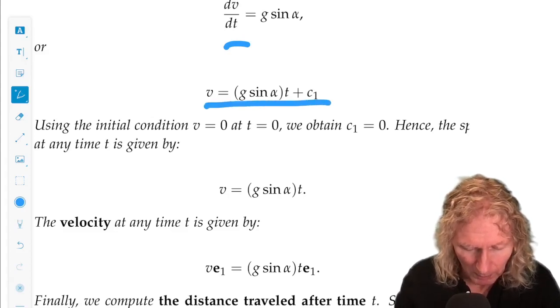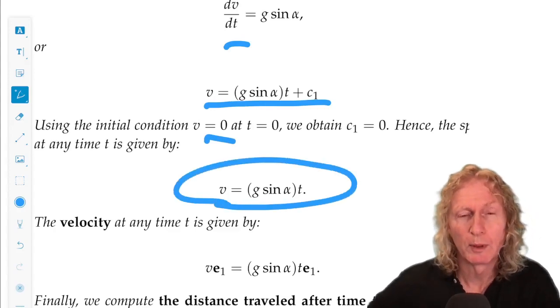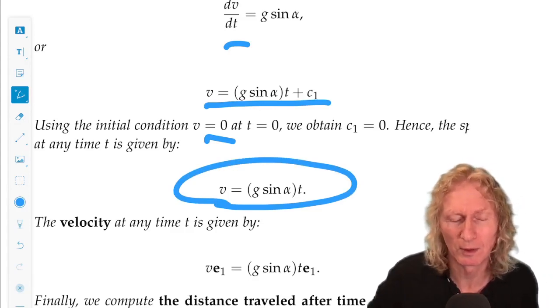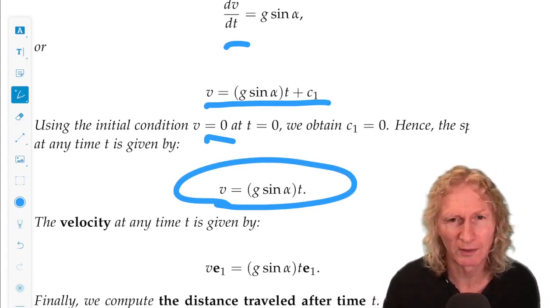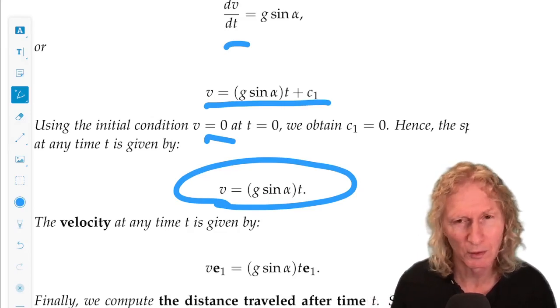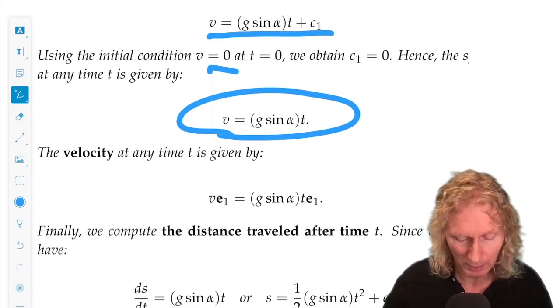Velocity is zero at the top, and we get this for the speed. Not velocity, because I need to put the unit vector in, because velocity is a vector, but that's a picky point at this stage, because everything's in one dimension, but it's useful to keep remembering that velocity is a vector. It has a direction and a magnitude.